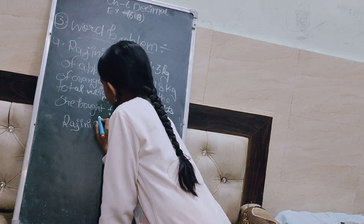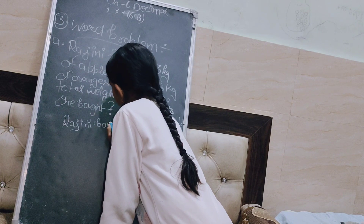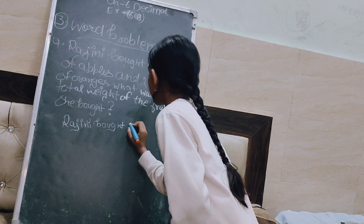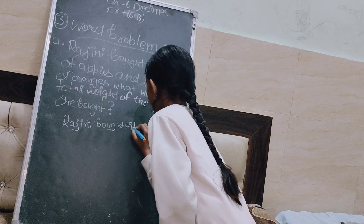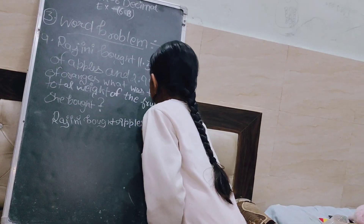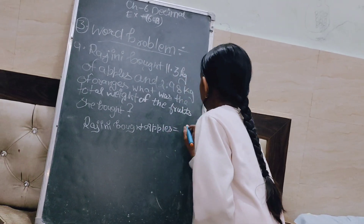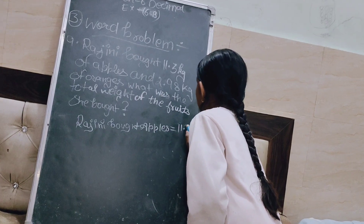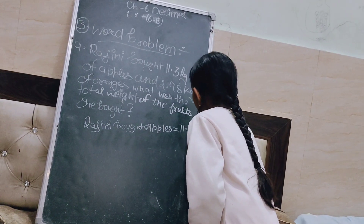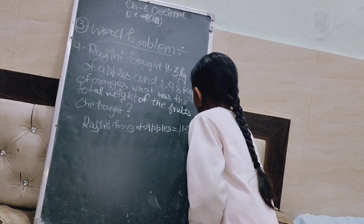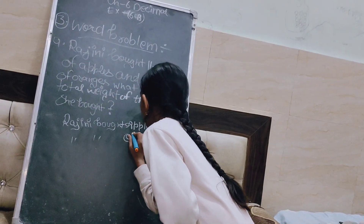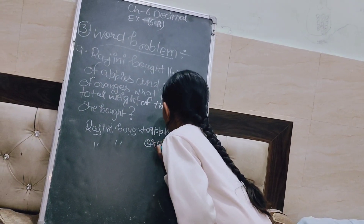Rajni has apples weighing 11.3 kg and oranges weighing 2.98 kg.